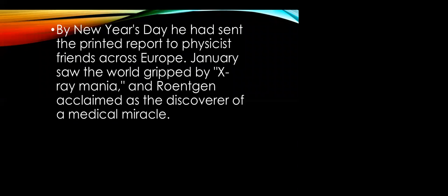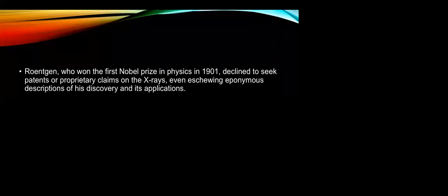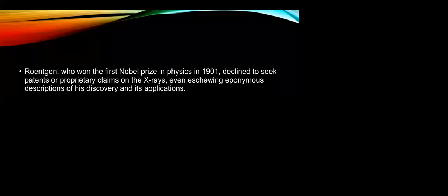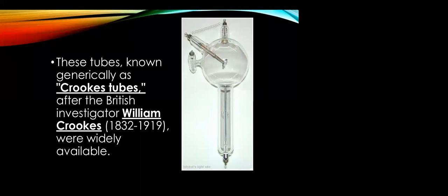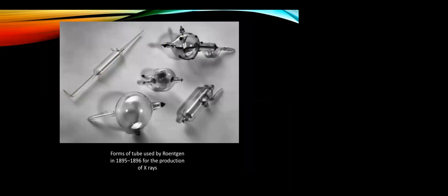Röntgen was acclaimed as the discoverer of a medical miracle. W.C. Röntgen, who won the first Nobel Prize in Physics in 1901, declined to seek any benefits for his discovery, even eschewing patents on the discovery and its applications. He used glass-enveloped tubes known generically as Crookes tubes, after the British investigator William Crookes — these were widely available during the period at which X-rays were discovered. This figure shows the different types of Crookes tubes that were used by Röntgen in the period 1895–96 for the production of X-rays.